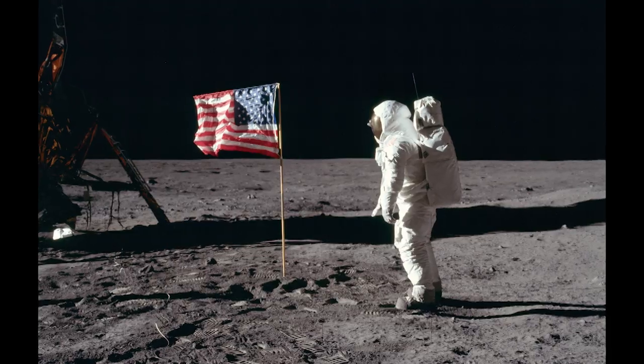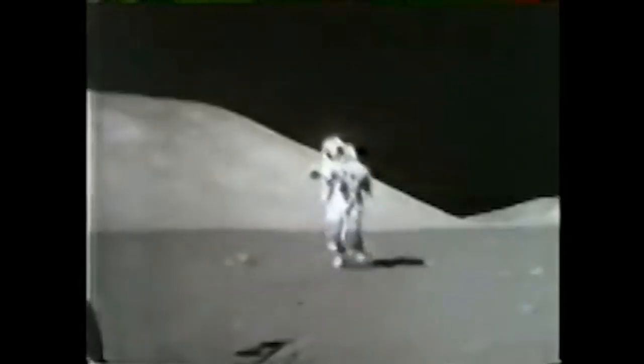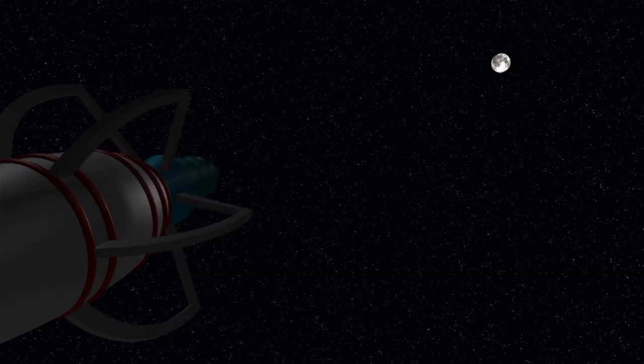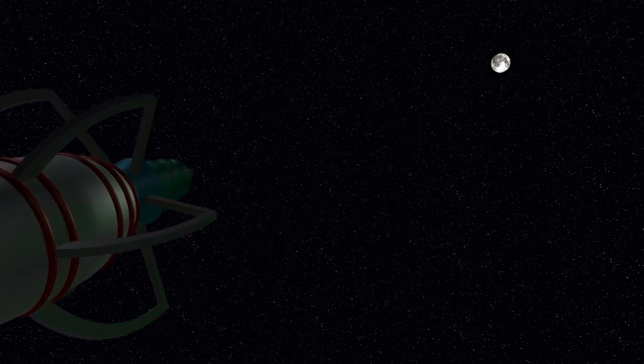When Neil Armstrong and Buzz Aldrin landed on the moon, they left behind a mirror. With this mirror, we can reflect laser beams off the moon, and this lets us measure the distance to the moon.